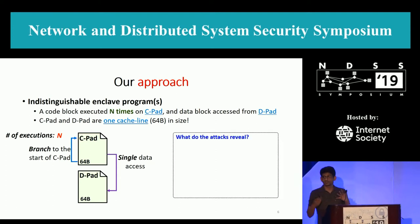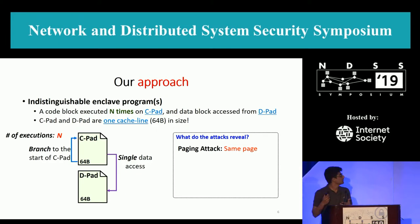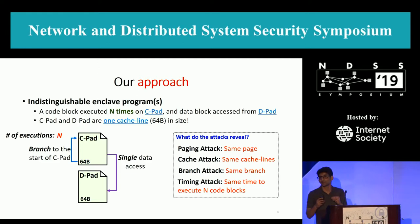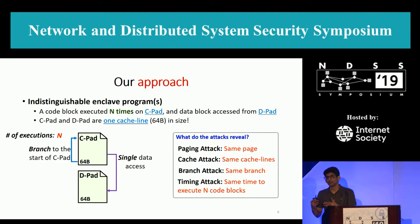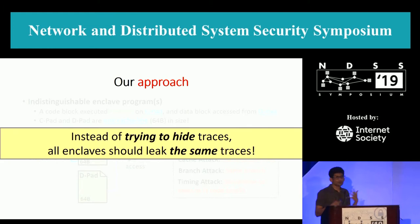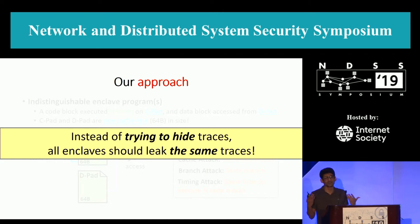What does this sort of program reveal to the attacker? With a paging attack, the program reveals the same page over and over. With a cache attack, it reveals the same cache line again and again. With a branch attack, there's only a single branch and you see the same branch repeatedly. And for timing — assuming each CPAD takes the same amount of time — N iterations would take the same amount of time. So irrespective of whatever program is in the CPAD executing, it reveals the exact same traces to the attacker. Instead of the enclave trying to hide the traces, we design enclaves that show the same traces over and over.